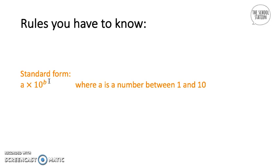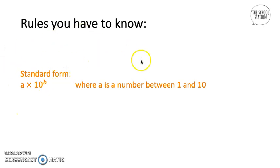So 0.03: if we multiply by 10 we get 0.3, which is still not between 1 and 10, but if we multiply by 100 we get 3. So 3 times 10 to the power of minus 2 is 0.03 in standard form. Standard form is always a times 10 to the power of b, where a is between 1 and 10, and b can be positive or negative.